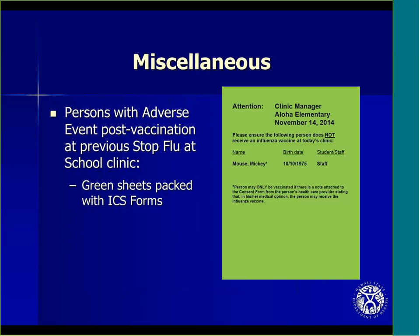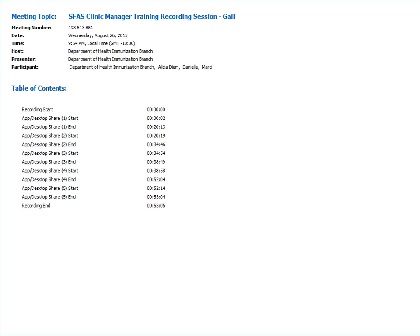Persons with adverse events post-vaccination at a previous Stop Flu at School clinic will be listed on a green sheet, which will be packed with the ICS forms. The list will include the names of persons who should not be vaccinated at a Stop Flu at School clinic and those who may only be vaccinated with a doctor's note. This concludes this portion of the training.